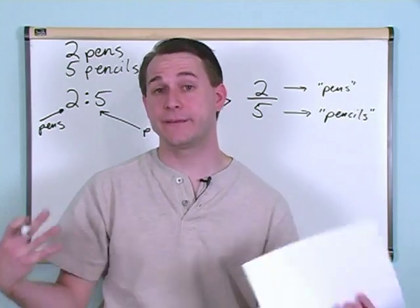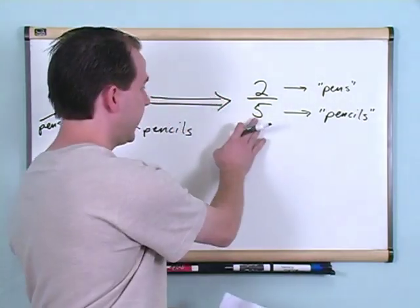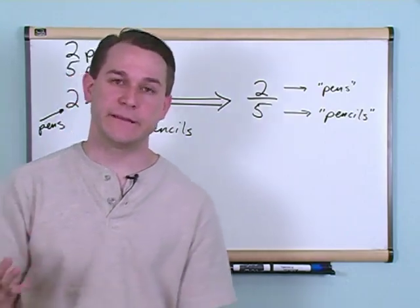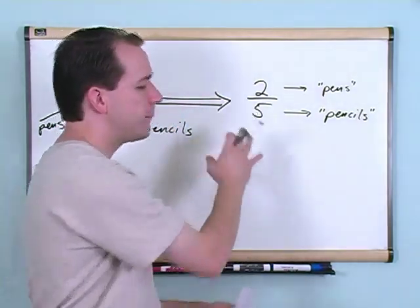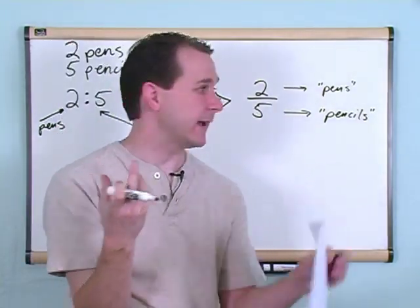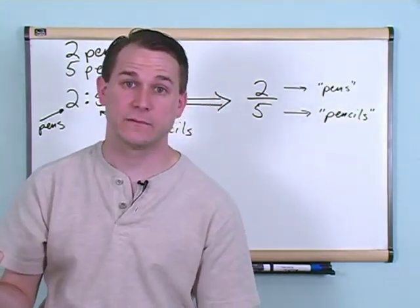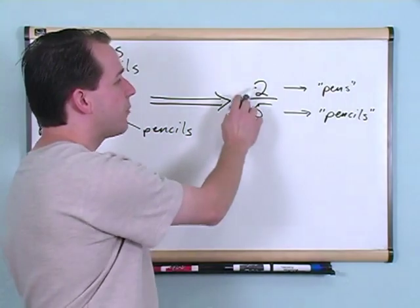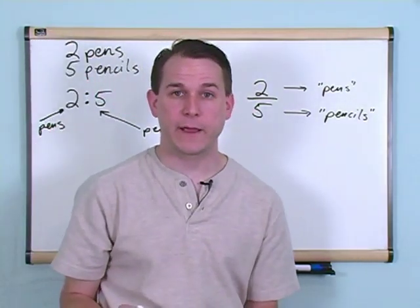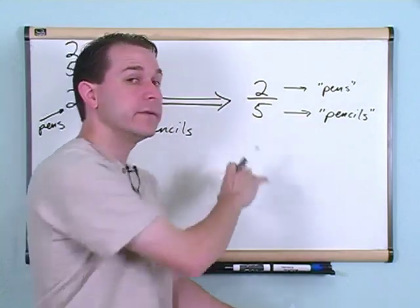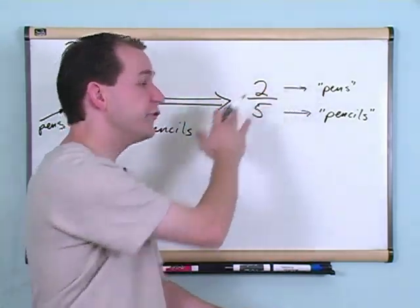If I were to pull ten pencils out of the drawer, ten, not five, but ten, so I would double this. How many pens do you think you would find? Well, if I pull five pencils out and I expect to find two pens, then if I pull ten pencils out, I think I probably should find four pens. Because I'm doubling everything. I pull twice as many pencils out, so ten pencils, I should find twice as many pens.